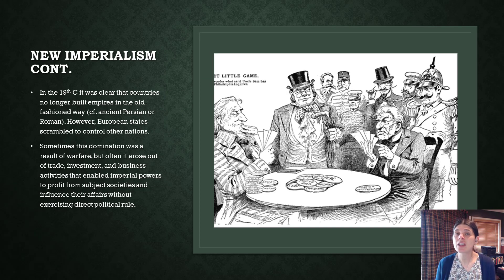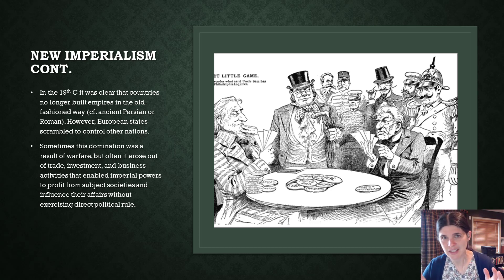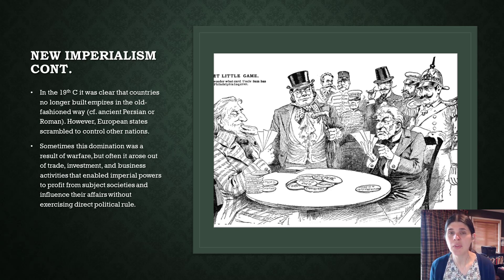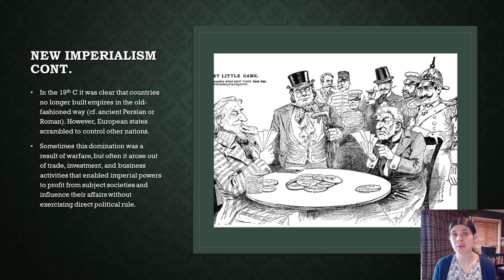In the 19th century, it was clear that countries no longer built empires in the old-fashioned way — think the Persians, the Romans, or the Mongols, who had vast continuous land empires. People aren't doing this anymore. What European states did was scramble to control other states. Sometimes this domination was a result of warfare, but often it arose out of trade, investment, and business activities that enabled imperial powers to profit from subjected societies and influence their affairs without exercising direct political rule.